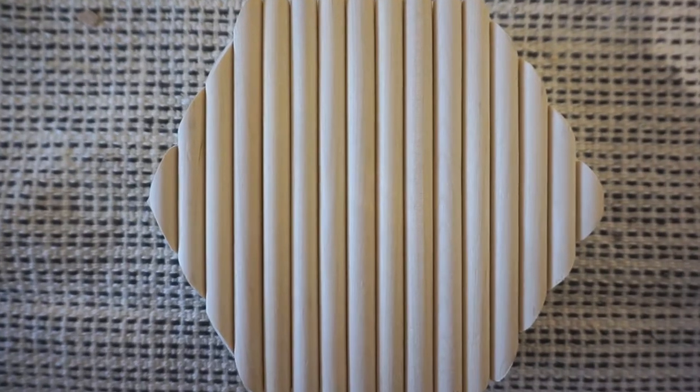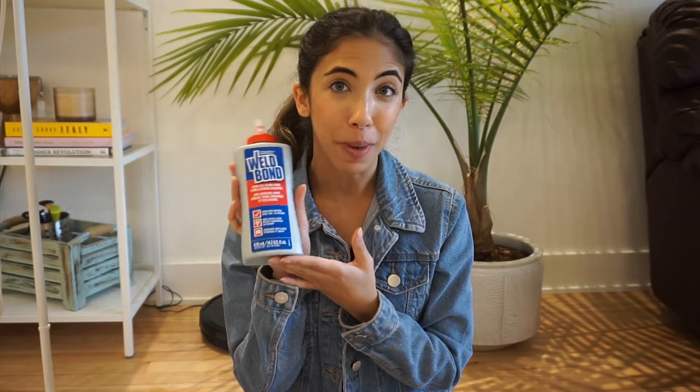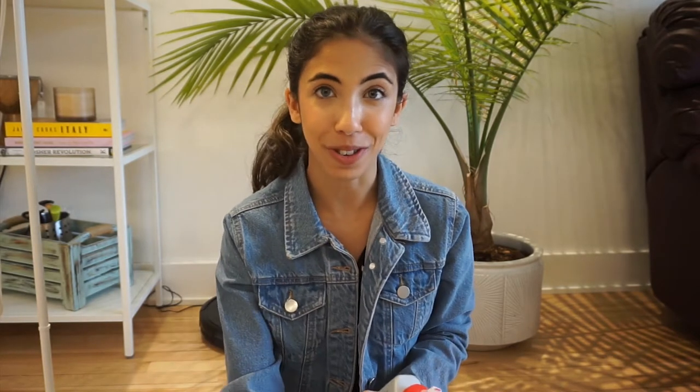So after a good amount of sanding, I'm finally done and I've got my dowels all ready here. I'm going to use my favorite wood glue bond over here and then I'm going to glue them down to my hex shape.